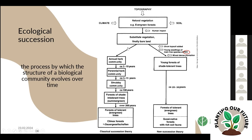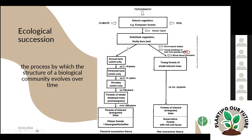This process takes a long time — it can take up to 200 years if we just leave nature as it is. The important concept circled in the figure is the PNV — the Potential Natural Vegetation — which is the next important thing to know when we eventually plant a tiny forest.